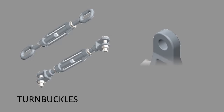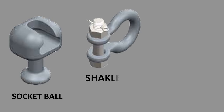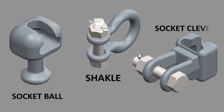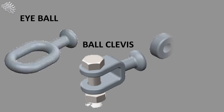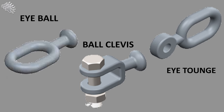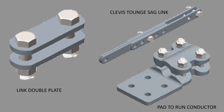Turnbuckles. Twisted clevis tongue. Socket wall. Circle. Socket clevis. Eyeball. Ball clevis. Eye tongue. Double plate link. Clevis tongue; sag link; pad 2 conductor run.